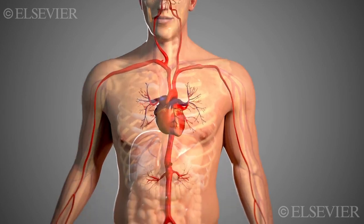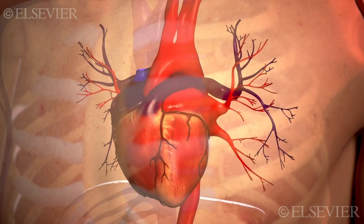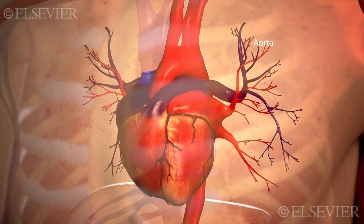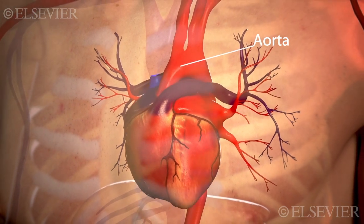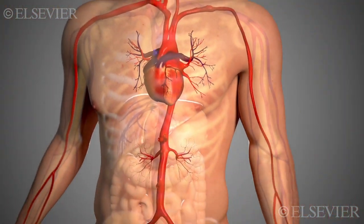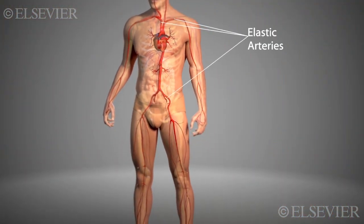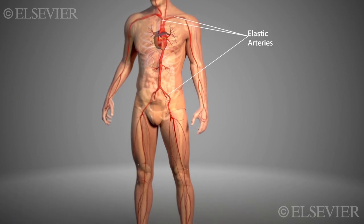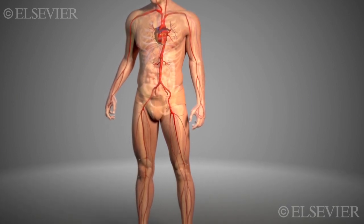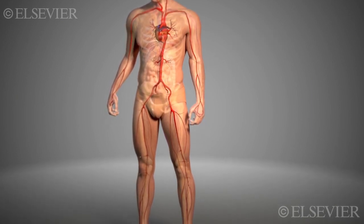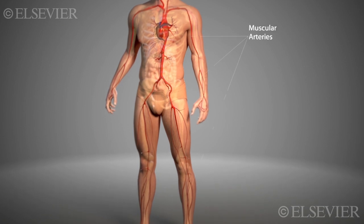Elastic or conducting arteries are the largest in the body and include the aorta and some of its major branches. The elastic arteries stretch to accommodate the surge of blood from ventricular contraction, then elastic recoil moves the blood further on.